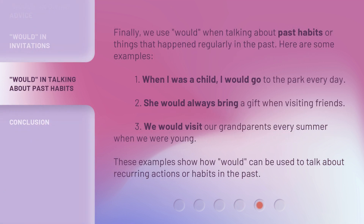Finally, we use 'would' when talking about past habits or things that happened regularly in the past. Here are some examples. One: when I was a child, I would go to the park every day. Two: she would always bring a gift when visiting friends. Three: we would visit our grandparents every summer when we were young. These examples show how 'would' can be used to talk about recurring actions or habits in the past.